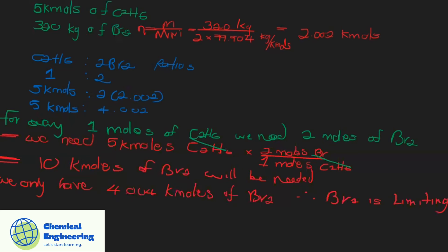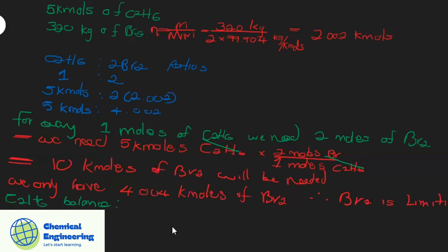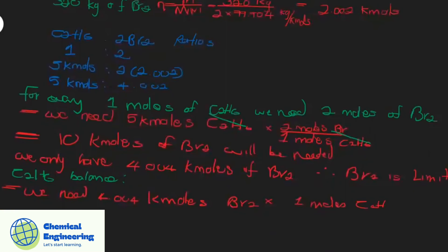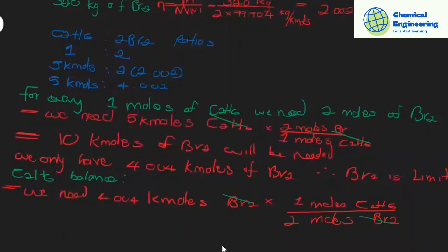You could also do this the other way around. Using ratios to calculate how much ethane would be needed, the bromide units cancel out, and therefore only 2 kilomoles of ethane will be needed.